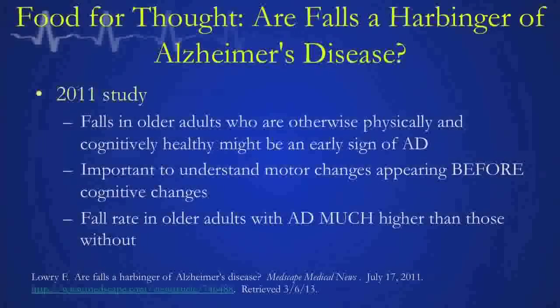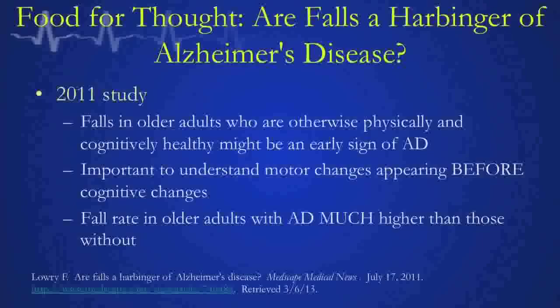Food for thought — an addendum to this lecture. This isn't directly related to trauma but is related to falls as a leading cause of trauma. Looking at a 2011 study: can falls be a predictor of disease states such as Alzheimer's disease? Can we try to anticipate people developing dementia just from clinical information such as a fall? We know the fall rate in older geriatric patients with Alzheimer's disease is much higher than the general group. What else do we know about this concept that may be helpful in providing preventive medicine in the context of falls?